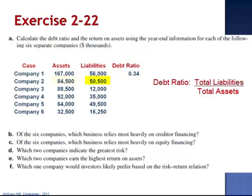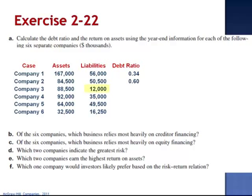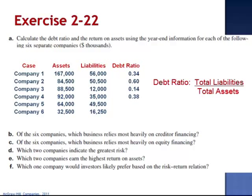Company 2: when we divide $50,500 by $84,500, the debt ratio is 0.60. For Company 3, $12,000 divided by $88,500 is a debt ratio of 0.14. For Company 4, $35,000 divided by $92,000 is a debt ratio of 0.38. Company 5: $49,500 divided by $64,000 is a debt ratio of 0.77. And Company 6: $16,250 divided by $32,500 is 0.50.